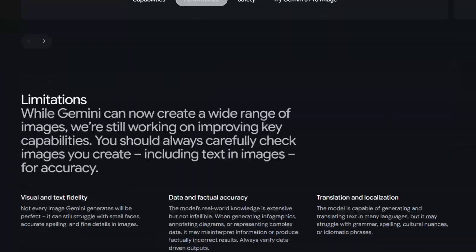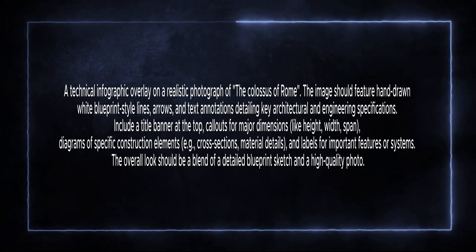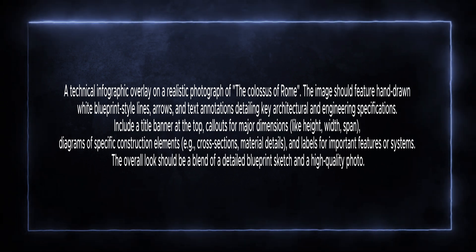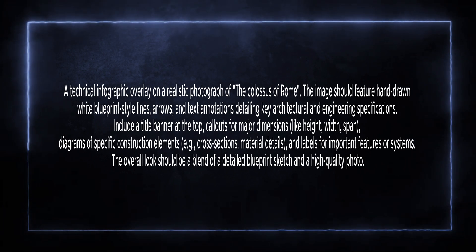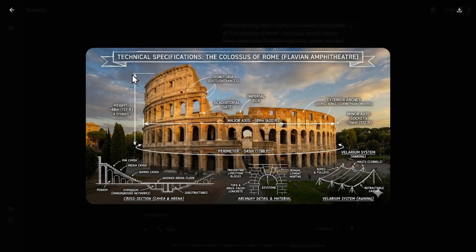To kick things off, here is the first prompt: a technical infographic overlay on a realistic photograph of the Colosseum of Rome. The image should feature hand-drawn, blueprint-style lines, arrows and everything. And this is what we get. This looks pretty great. I don't know if those lines are completely correct with heights and everything, but for example, four stories - one, two, three, four - yeah, seems like four stories. Perimeter, major axis. Look at how good that looks.